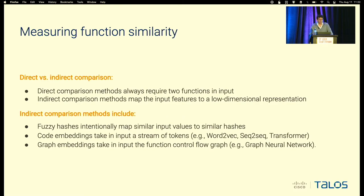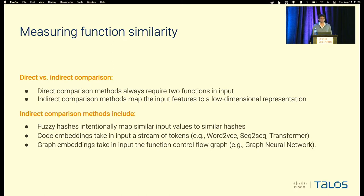In terms of measuring function similarity, there are two main techniques. The first is direct comparison, where the method takes two functions as input, but this limits the scalability of the approach. On the other hand, there are indirect comparison methods, which map the function into a low-dimensional representation and then use some kind of similarity measure — like Euclidean distance or cosine similarity — to measure similarity between functions.